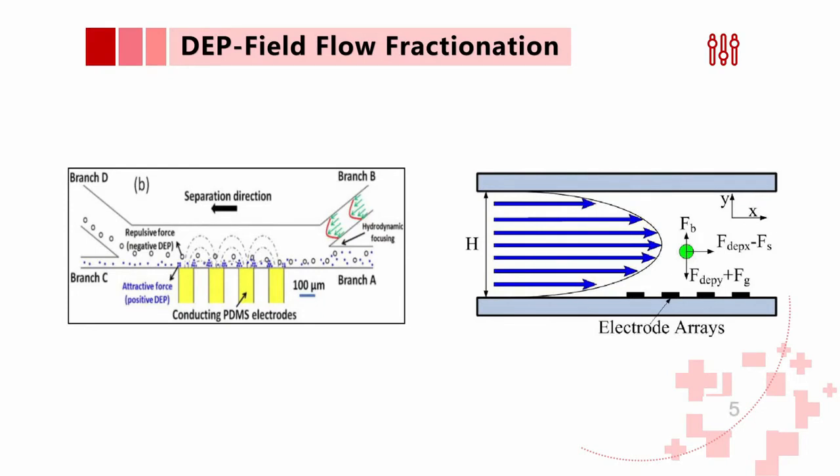There are many approaches with microfluidics to operate cell sorting. The specific method we used is called field flow fractionation. DEP force is caused by non-uniform electric field. The CM factor in the DEP force depends on the permittivity of the particle and the medium, meaning particles with different sizes face different DEP forces.